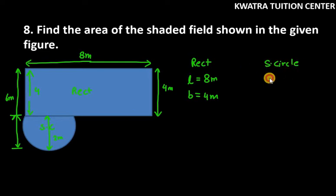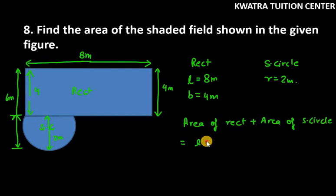Now we have to find area of rectangle plus area of semicircle. Area of rectangle is l into b plus area of semicircle is pi r square over 2.